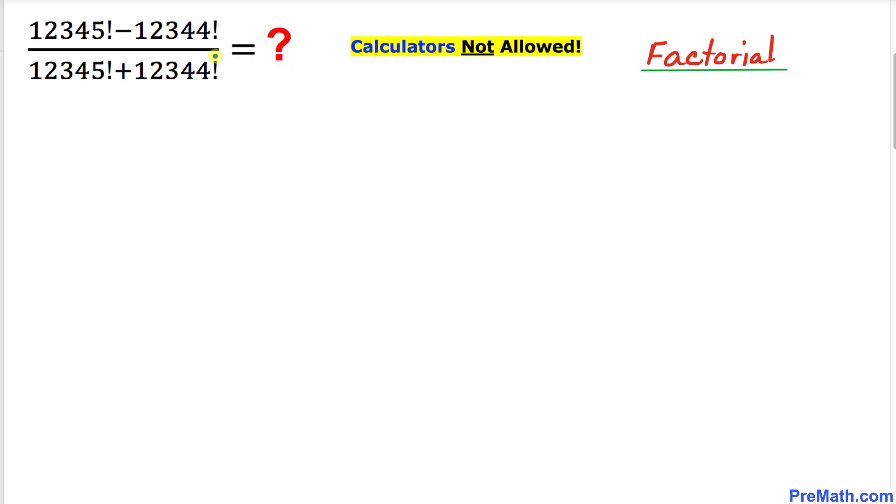Welcome to PreMath. In this video tutorial we are going to find the value of this given rational expression that involves factorials. Here's our problem: 12,345 factorial minus 12,344 factorial divided by 12,345 factorial plus 12,344 factorial. Moreover, we are not supposed to be using calculators of any kind.